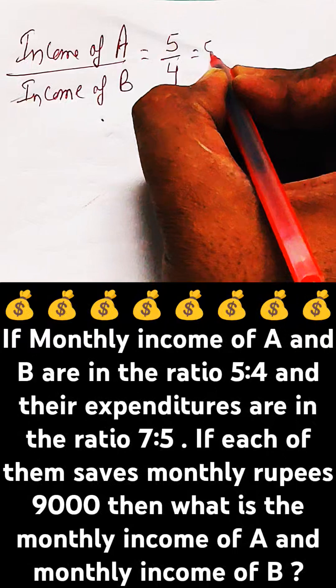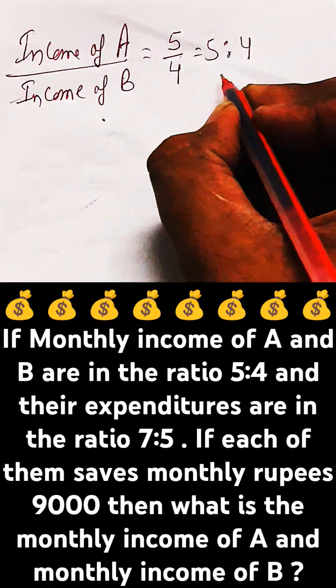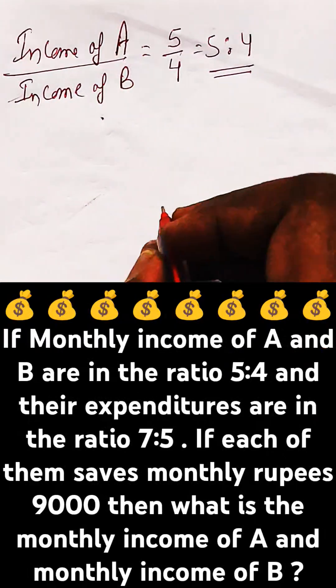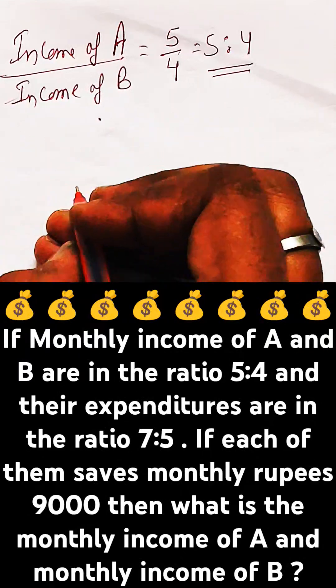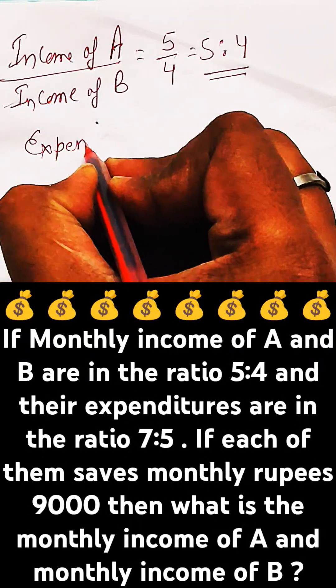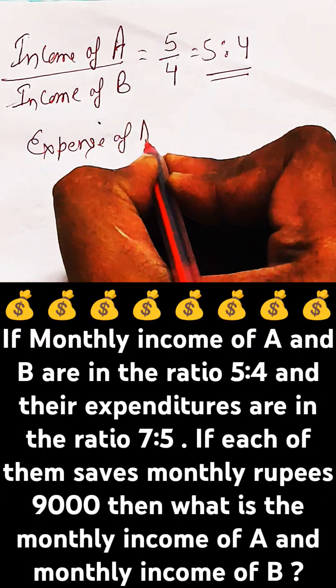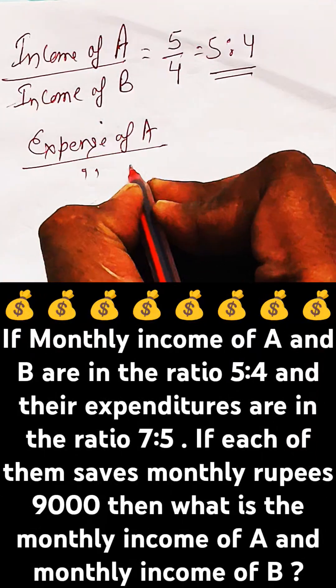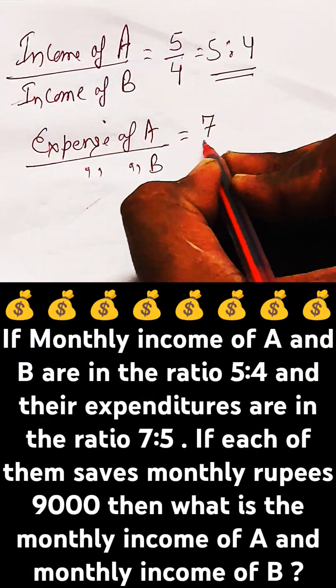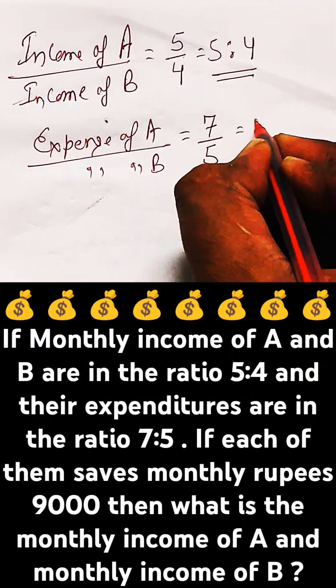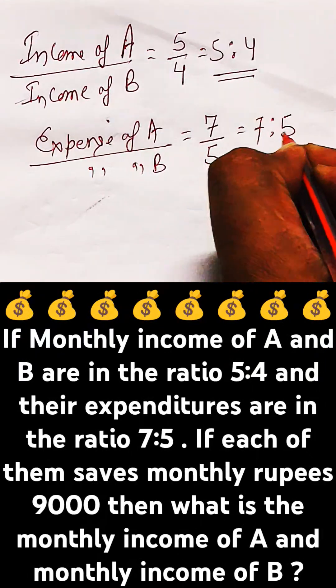This is the data given in the question. Their expenses are also in the ratio 7 is to 5. So we can write expense of A by expense of B is given in the ratio 7 is to 5.